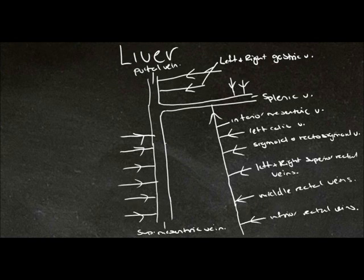Joining the superior mesenteric vein, we have the right gastroepiploic vein, the posterior and anterior superior pancreaticoduodenal veins, as well as the inferior of these veins.